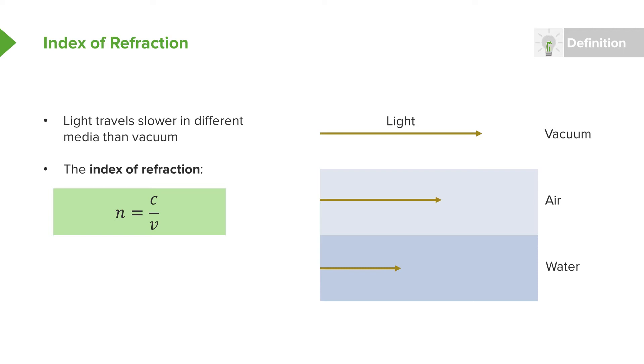We can define for each medium something called the index of refraction. That is the ratio of the normal speed of light in a vacuum, c, to the speed of light in whatever medium it's traveling through. By this definition of the index of refraction, n,